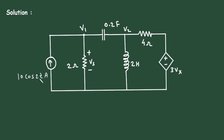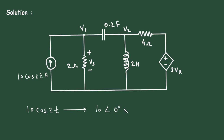As we can see here, this is the source current: 10 cos(2t). It is currently in time domain. If we convert this into frequency domain, it will be 10 at an angle of 0 degrees. Here the value of omega is equal to 2 radians per second.